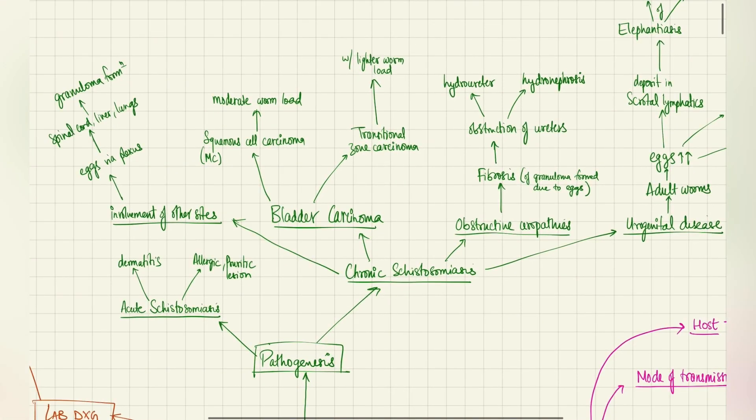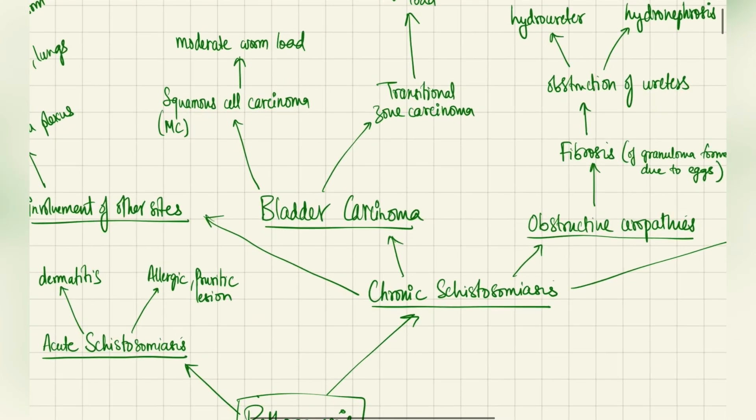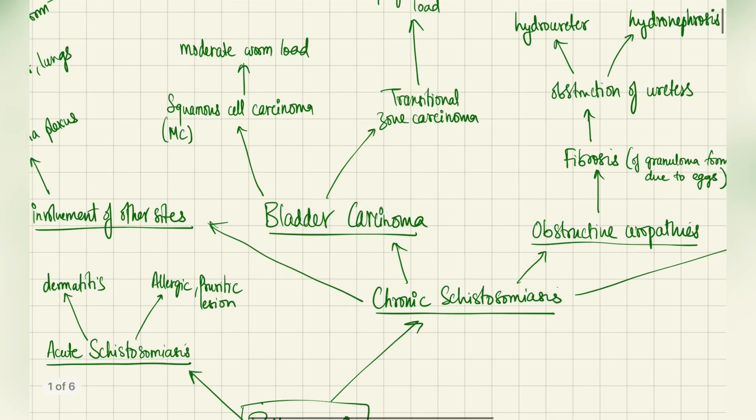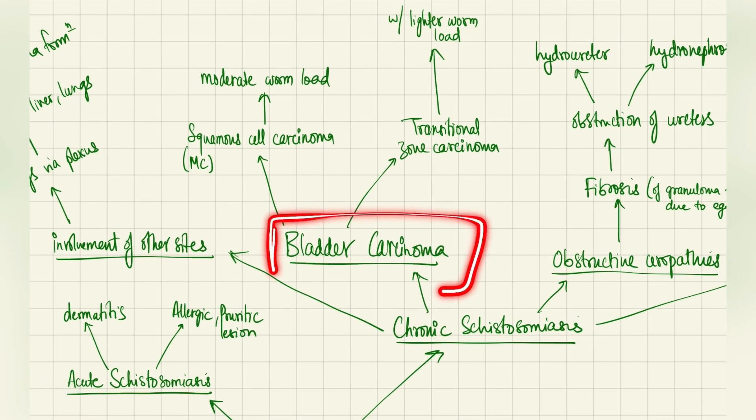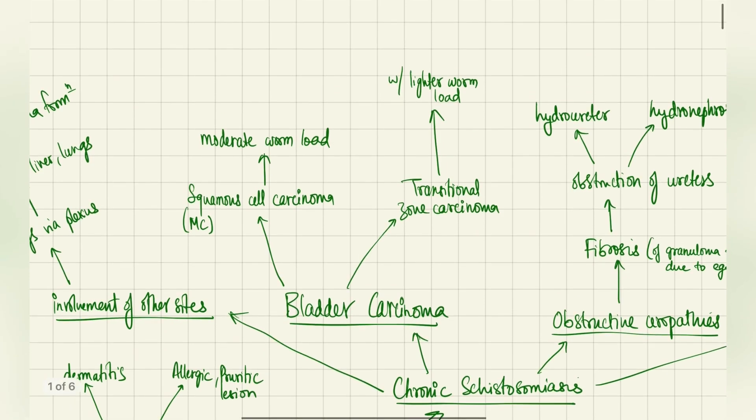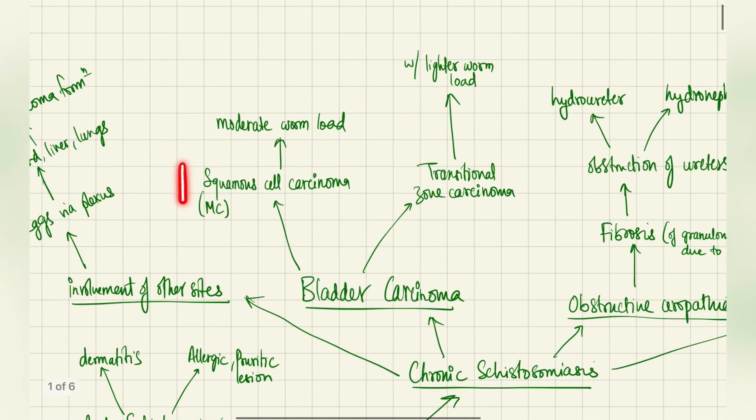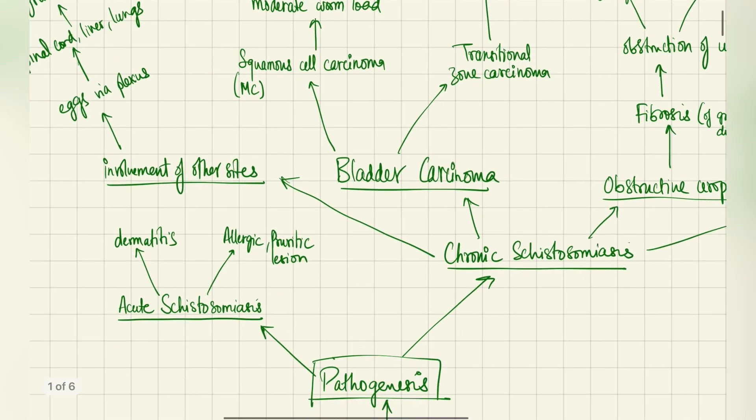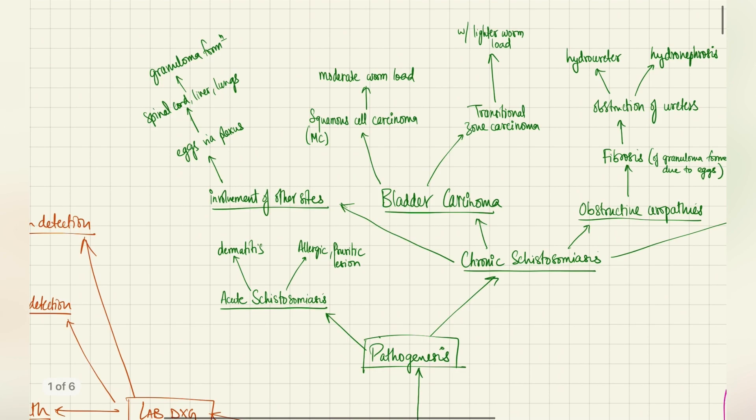Next, one of the more important manifestations which are tested on various exams, whether USMLE or your board exams, is bladder carcinoma. There's a risk of development of bladder carcinoma because of this parasite. Especially the most important thing you should remember is that the most common type of cancer associated is squamous cell carcinoma. This is very important. With a lighter worm load, you may have a chance to develop a transitional zone carcinoma, but the thing you ought to remember is the squamous cell carcinoma. This is the most important detail. So there's a risk of squamous cell carcinoma with Schistosoma haematobium infection.